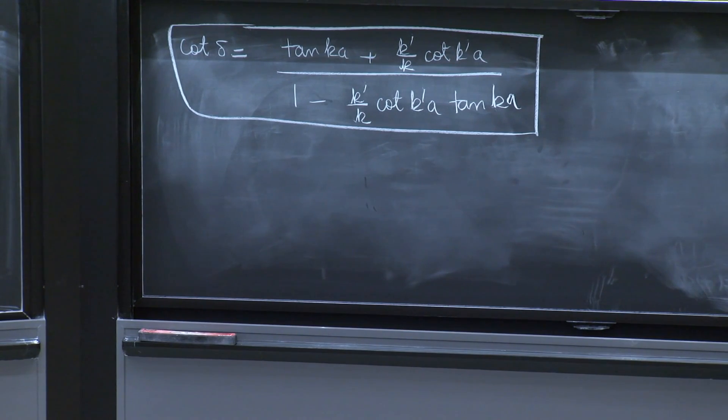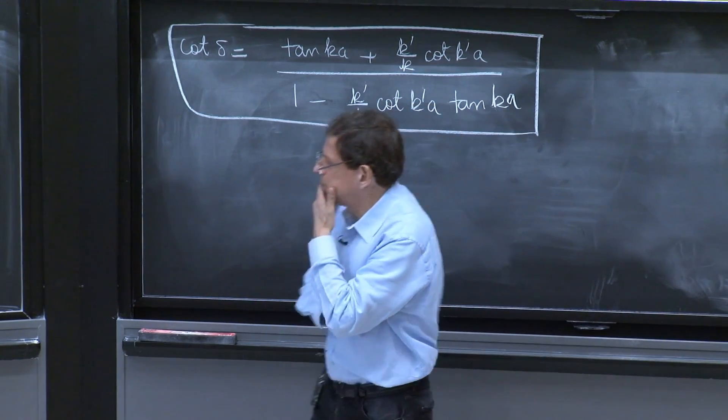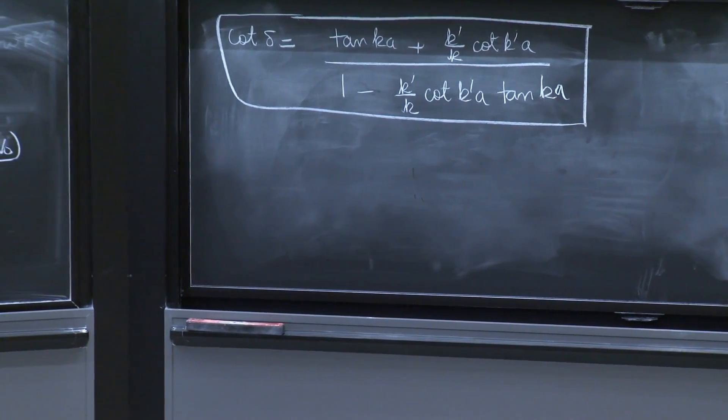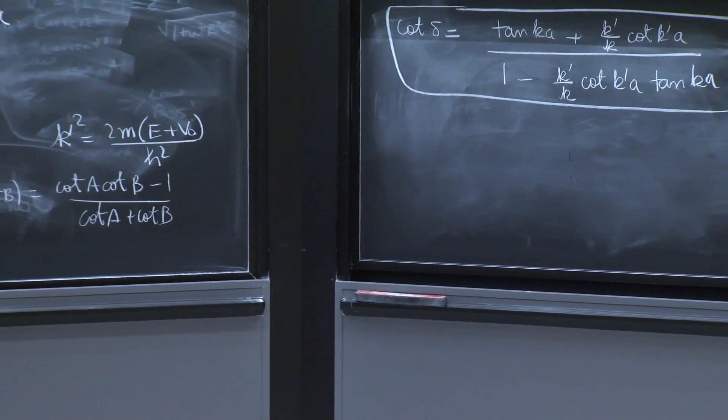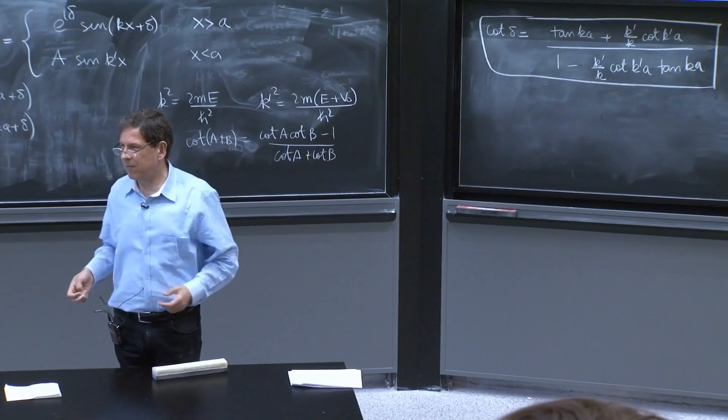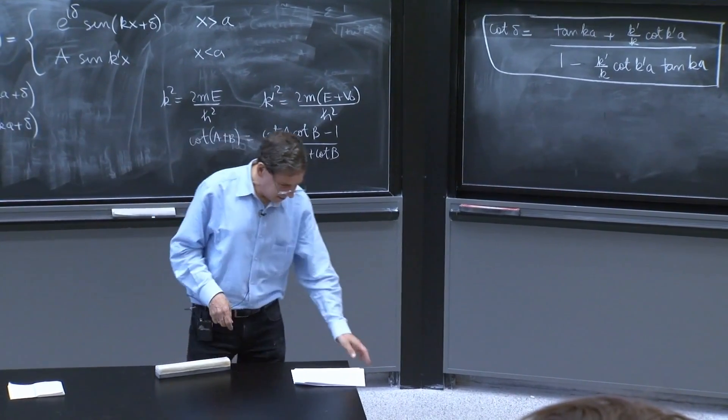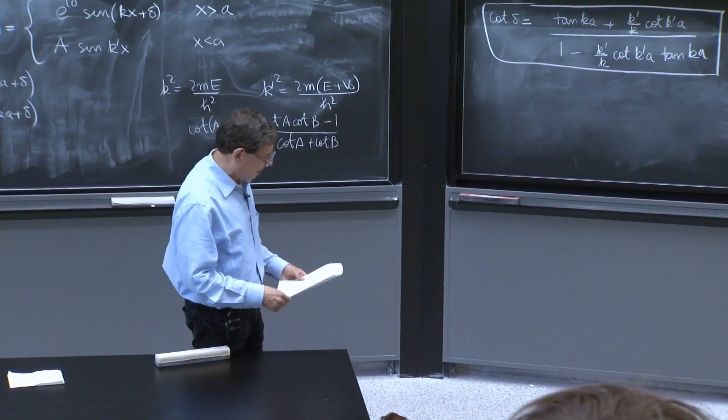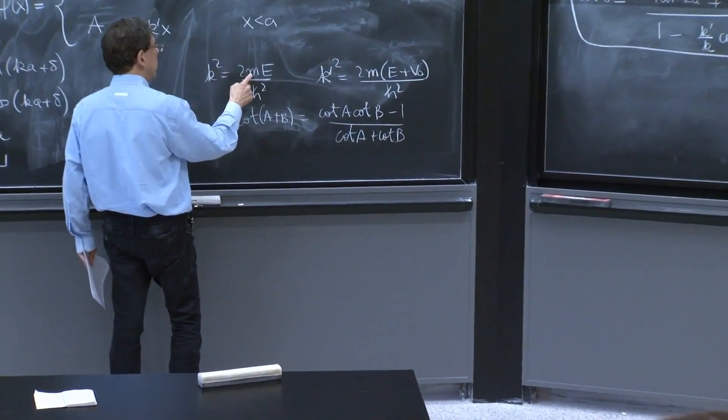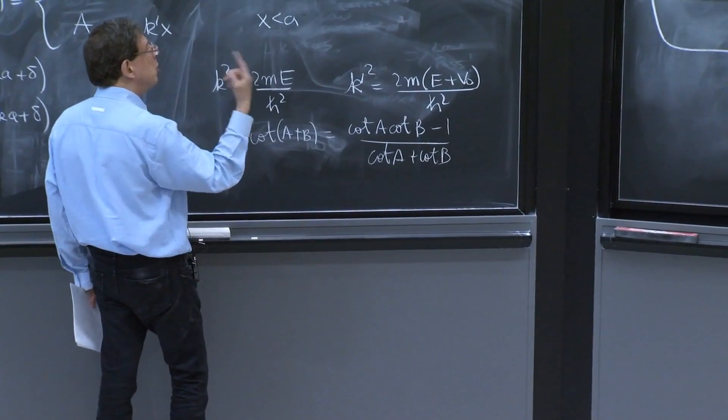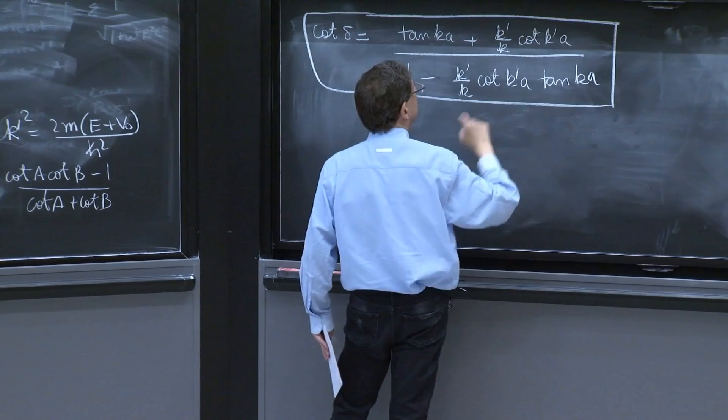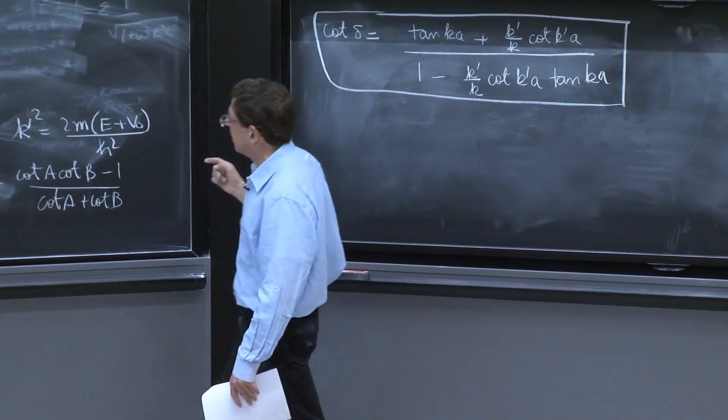So if you decide to plot this on a computer, again there's lots of variables going on here. You would want to figure out what are the right variables to plot this. And the right variables suggest themselves. From k squared equal 2mE over h-bar squared, you need dimensionless constants like ka, k prime a, and that's it.